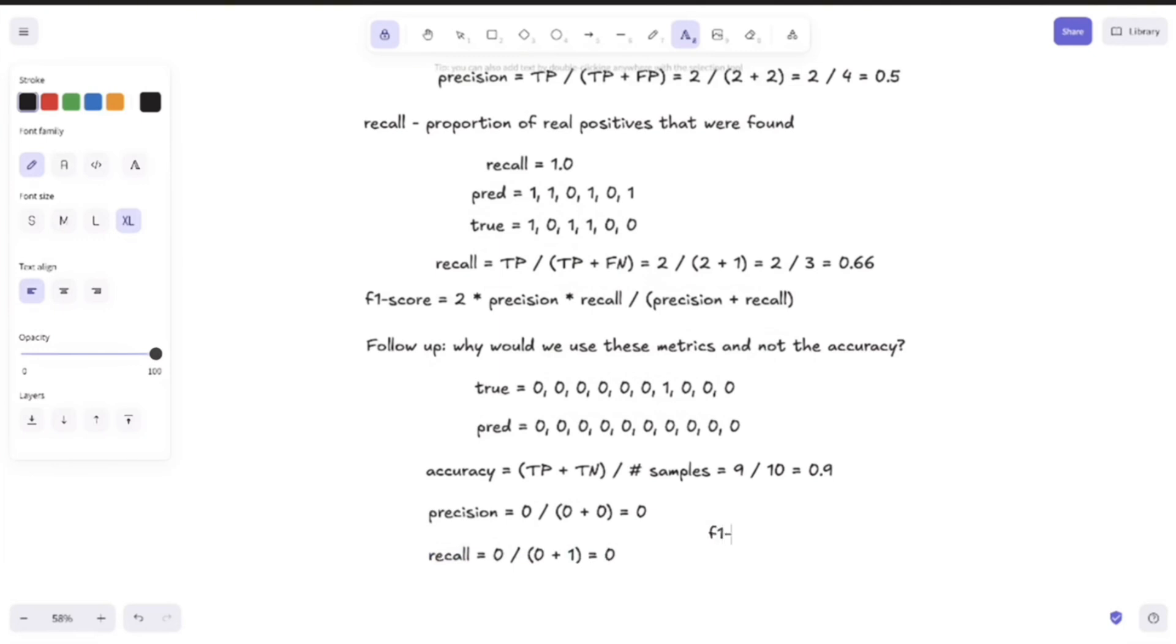And obviously the F1 score, which is the harmonic mean of the two, will also be equal to 0. So we have obtained a 0% F1 score in this case compared to the 90% accuracy, which is a pretty big difference.